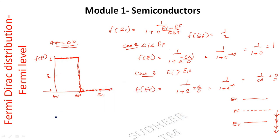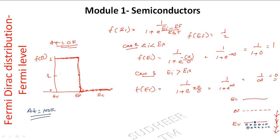At T = 0 K, the valence band is fully occupied by electrons with all states filled. At higher temperatures such as 100 K or 50 K, we expect some electrons to be thermally excited above the Fermi level.